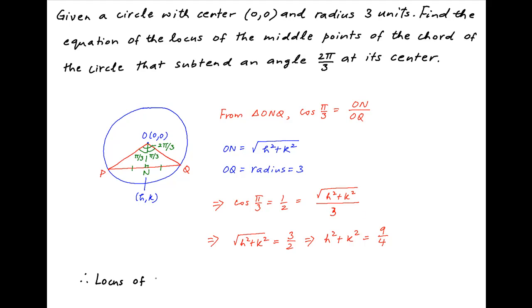Therefore, the locus of the midpoint of the chord PQ is obtained by replacing h with x and k with y, which is x² + y² = 9/4.